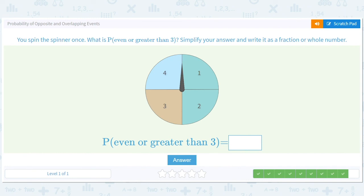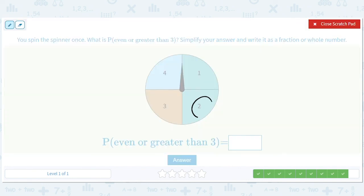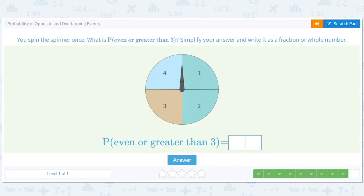You spin the spinner once. What is the probability of an even number or greater than three? So even numbers. Greater than three. There's only one number greater than three. Oh man, that doesn't give us any new opportunities. That's just two out of four, which is one half. So it is one out of two for 50-50.